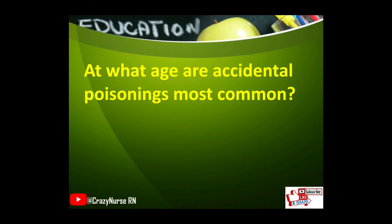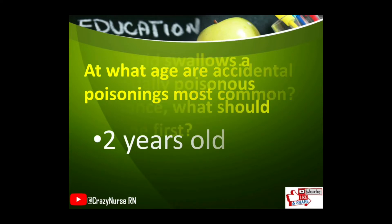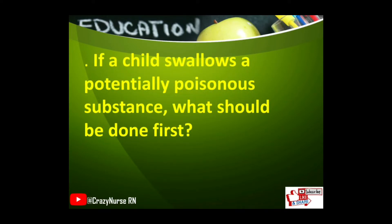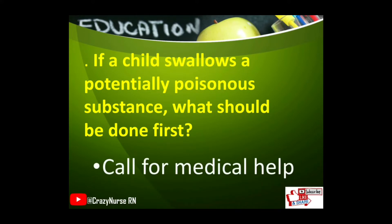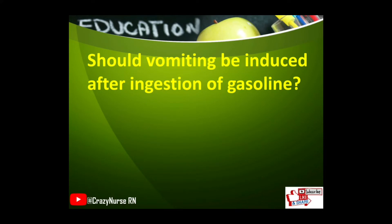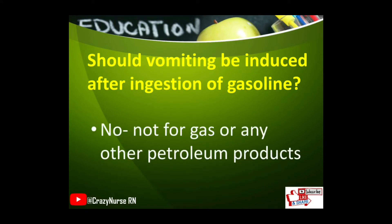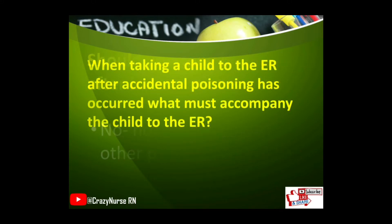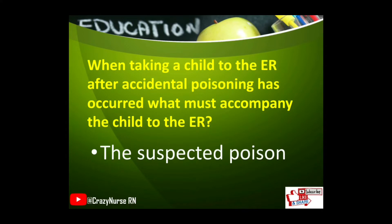At what age are accidental poisonings most common? Two years old. If a child swallows a potentially poisonous substance, what should be done first? Call for medical help. When taking a child to the ER after accidental poisoning has occurred, what must accompany the child to the ER? The suspected poison.